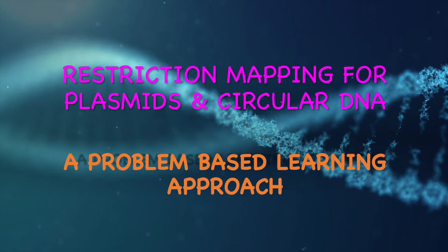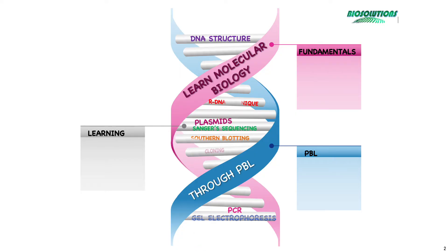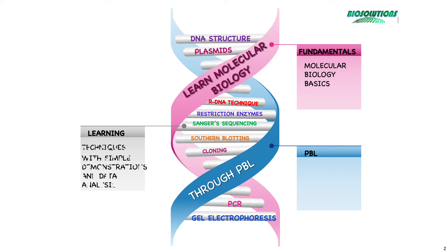Hi friends, welcome to this tutorial where we will be learning about restriction map constructions for any circular DNA and plasmids. This mapping is slightly different from the restriction mapping of a linear DNA fragment which we learnt in the earlier tutorial.